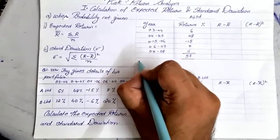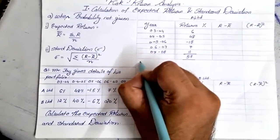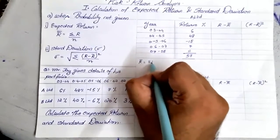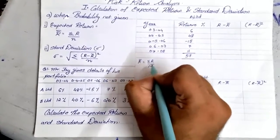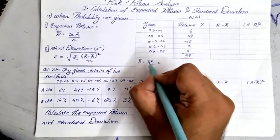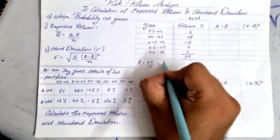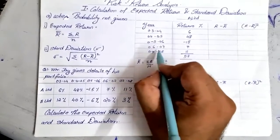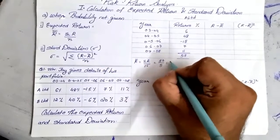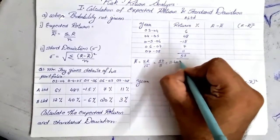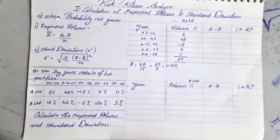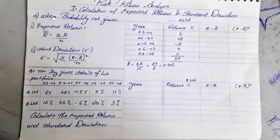Now the very first thing we need to find is expected return. Expected return r̄ = Σr/n, where the total of r is 57 and the number of observations n is 5. When you divide we get a value of 11.40%. So our expected return is 11.40%.